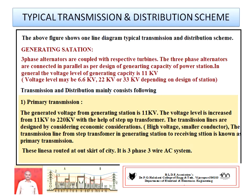First, write the components of the typical power system: number one, generating station; number two, primary transmission; number three, secondary transmission; number four, primary distribution; number five, secondary distribution. Write the components first, then explain each one.